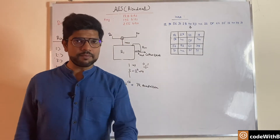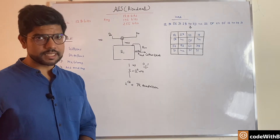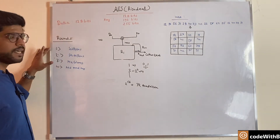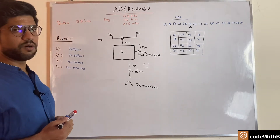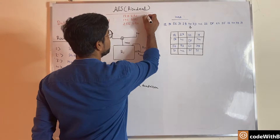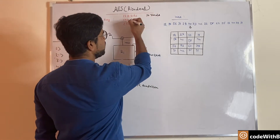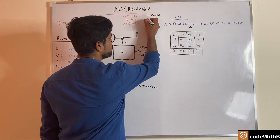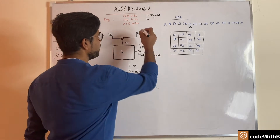As we learned with DES, to perform operations on data to make it secure there are various rounds. For the AES algorithm there are different kinds of rounds depending on key size. For 128 bits there are 10 rounds, for 192 bits there are 12 rounds, and for 256 bits there are 14 rounds.